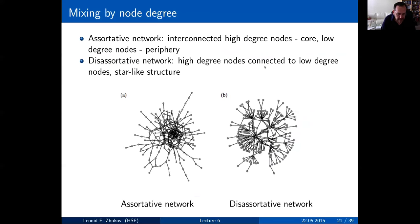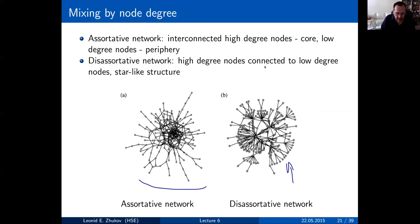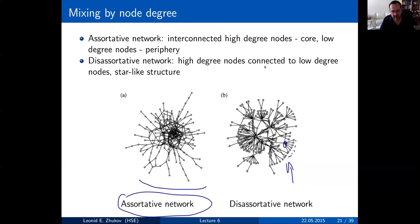Here is an example: in an assortative network, nodes of low degree connect to nodes of low degree, creating chains. In a disassortative network, you have fan structures where nodes of high degree connect to nodes of low degree. A lot of social networks are actually more assortative than disassortative — yet another way to get insight about network structure.